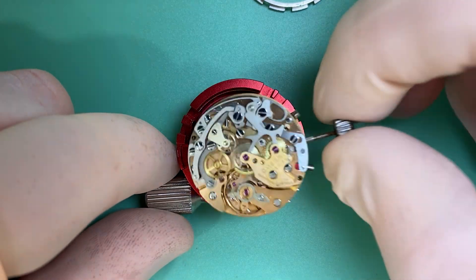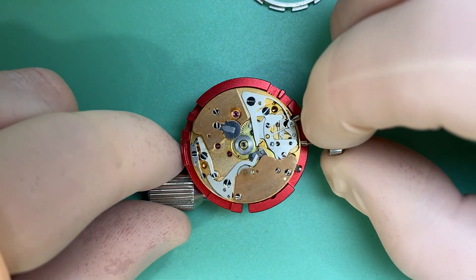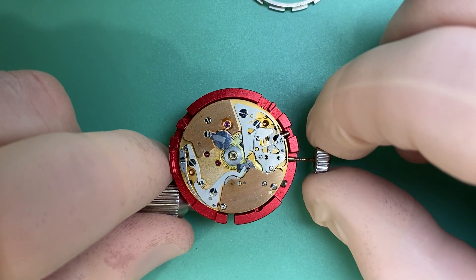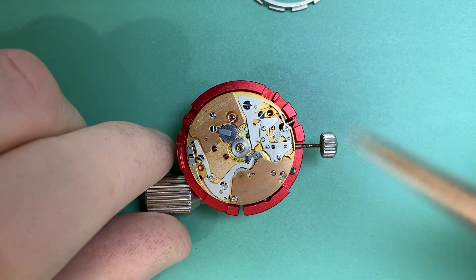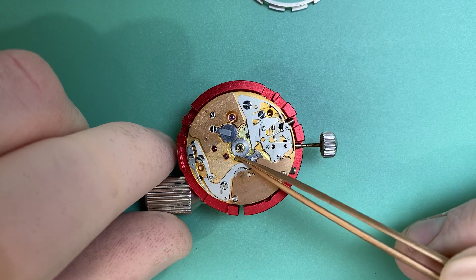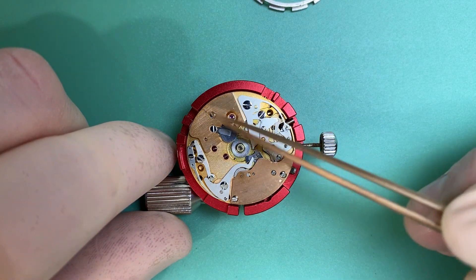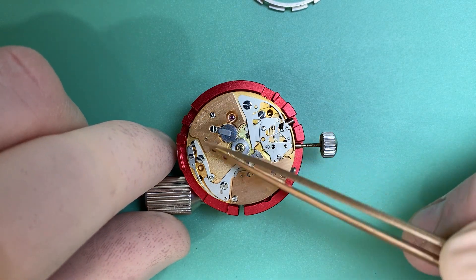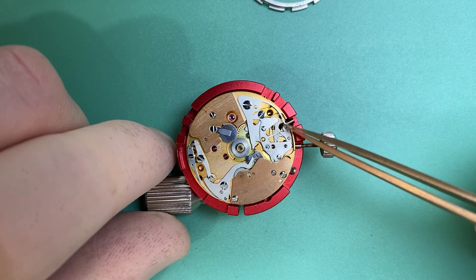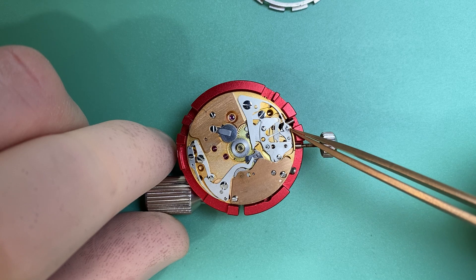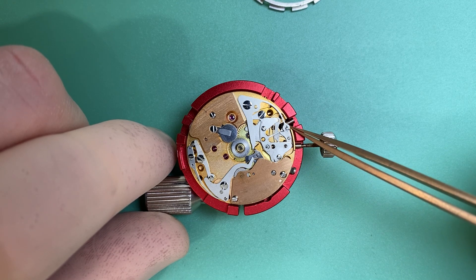But it's when we turn it over and look back at that dial side that we notice a few extra pieces. We notice that we have a wheel on top of our hour wheel. We have a different bridge set up here to an 861, and then we have a different lever set up here, and an extended piece on our setting lever here.